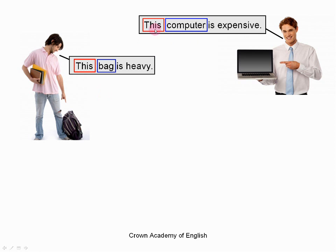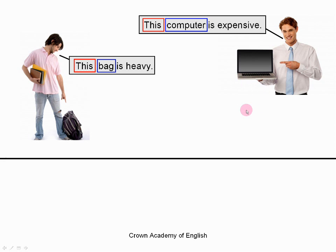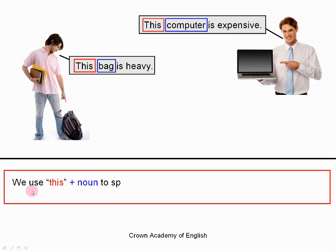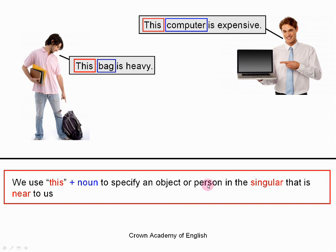This computer is expensive — not another computer, not a computer on the other side of the room. We are talking about a specific computer, the one in the man's hand. So we use 'this' with a noun to specify an object or person in the singular that is near to us. The important thing is that the object or person is singular and near to us.